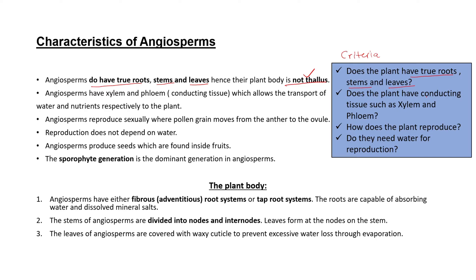The second characteristic is whether the plant has conducting tissue such as xylem and phloem. Xylem is responsible for transporting water into the plant, and phloem transports nutrients. Angiosperms do have xylem and phloem, which allows for transportation of water and nutrients to the plant. This is why angiosperms can grow big — they have conducting tissue that feeds them with water and photosynthetic products.